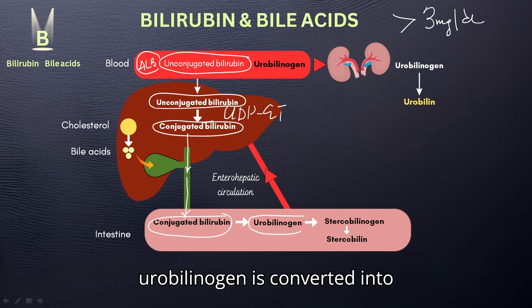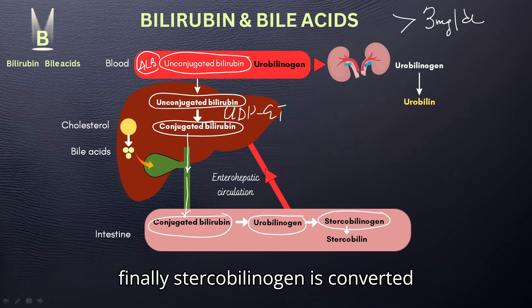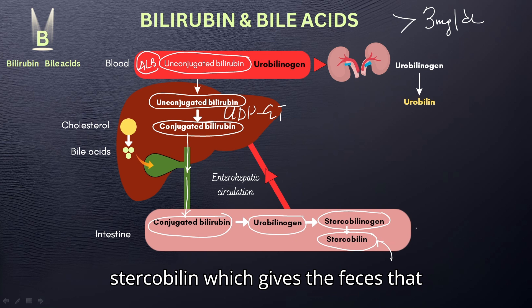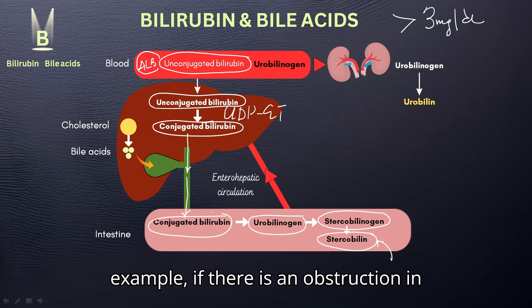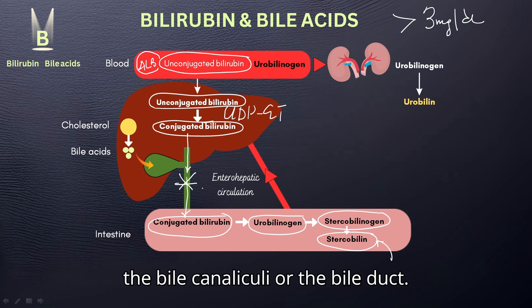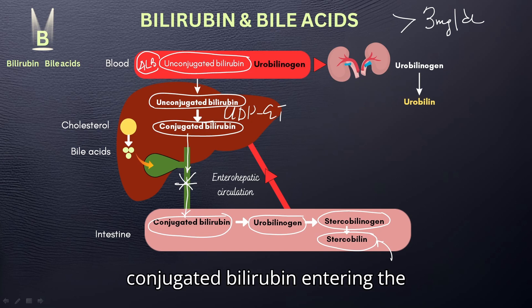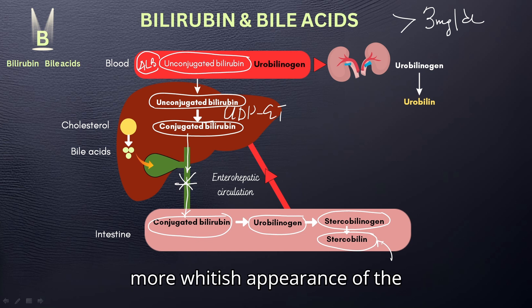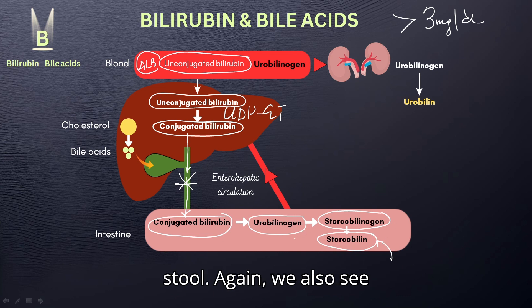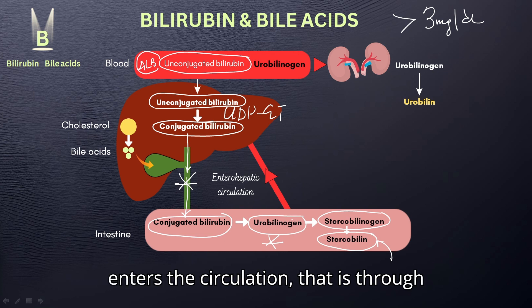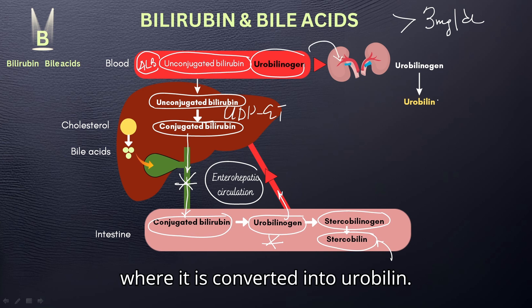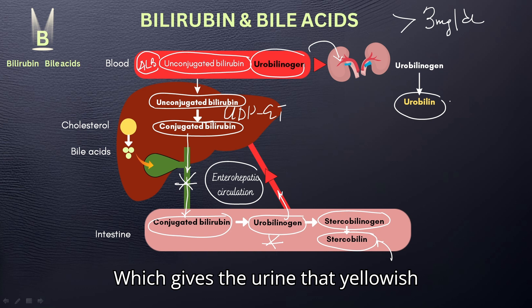Subsequently, urobilinogen is converted into stercobilinogen, and finally stercobilinogen is converted into stercobilin. It is stercobilin which gives the feces that brownish appearance. If there is an obstruction in the bile canaliculi or the bile duct, there would not be conjugated bilirubin entering the intestines; hence there would not be any stercobilin, leading to a more whitish appearance of the stool. We also see that urobilinogen re-enters the circulation through enterohepatic circulation, and once in the blood, it enters the kidneys where it is converted into urobilin, which gives the urine that yellowish appearance.